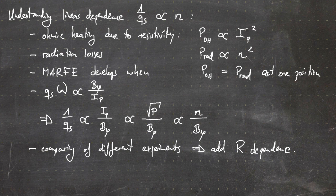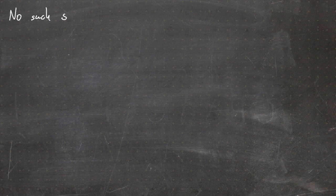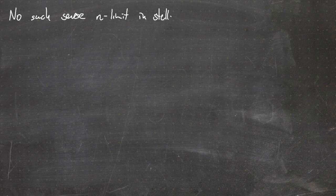The interesting thing is that this is an additional density limit occurring only in tokamaks. There is no such severe density limit in stellarators — this is something important to keep in mind.